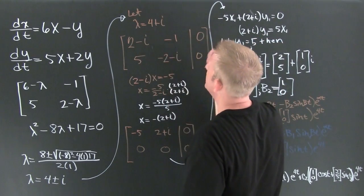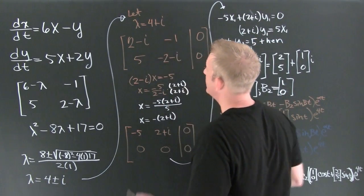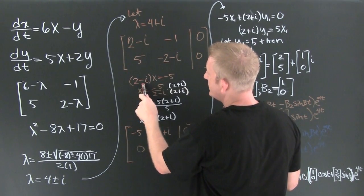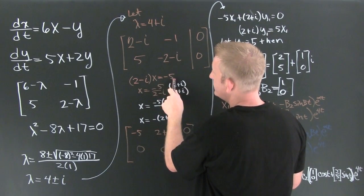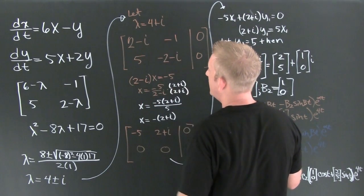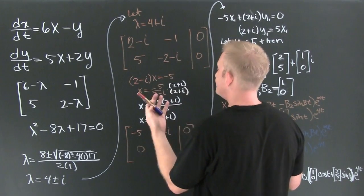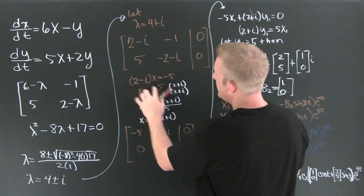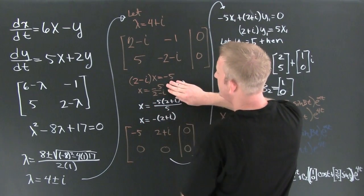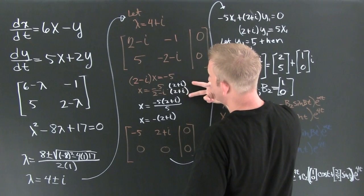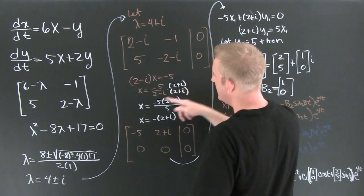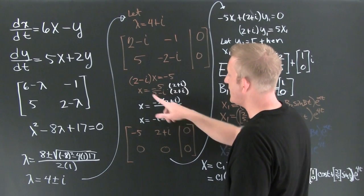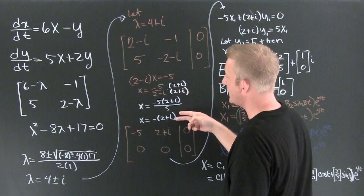Now I'm trying to reduce using row operations. I need to ask myself: what do I multiply 2 minus i by to get minus 5, so that when I add them it will eliminate that term? I find that I divide by 2 minus i, rationalize the denominator, multiply by its complex conjugate, and minus 5 times the numerator. Using the sum of squares, that gives 5. I reduce and find my x value.